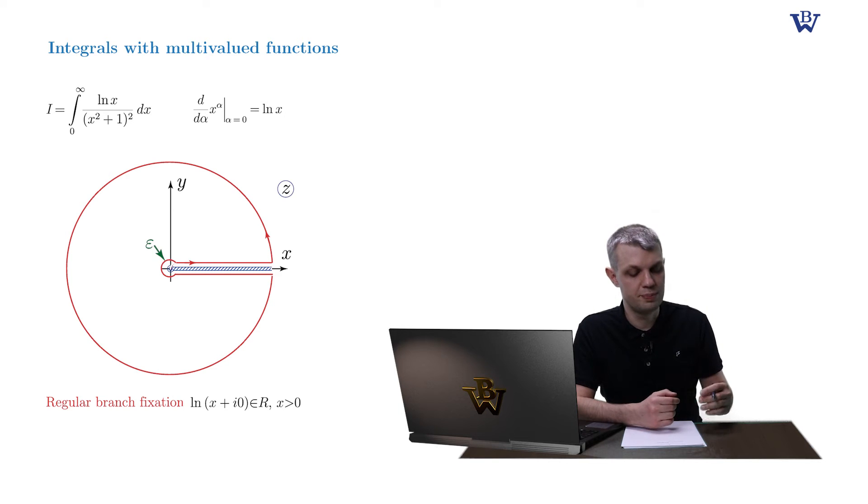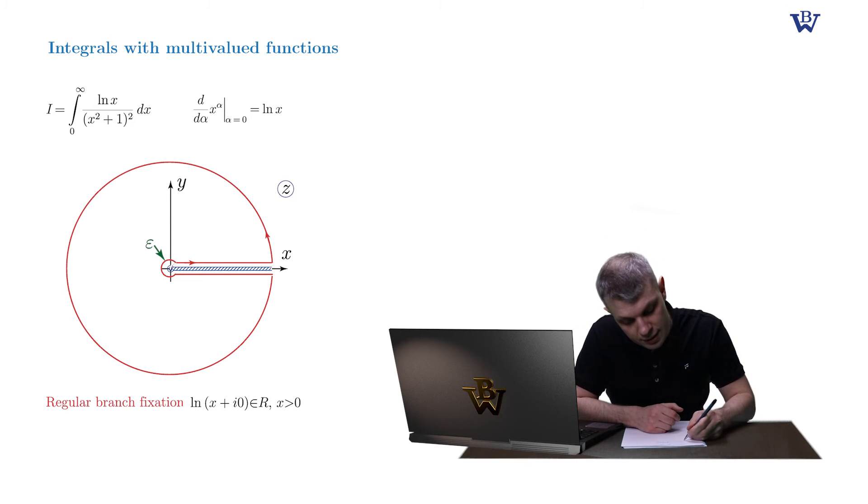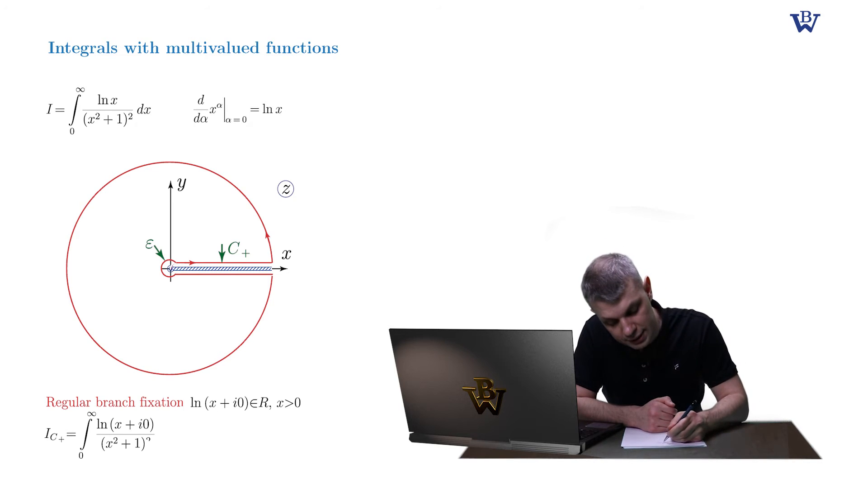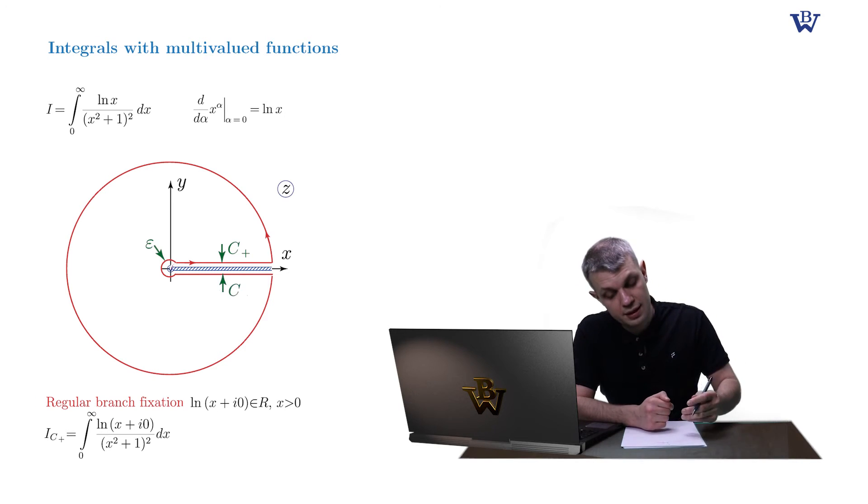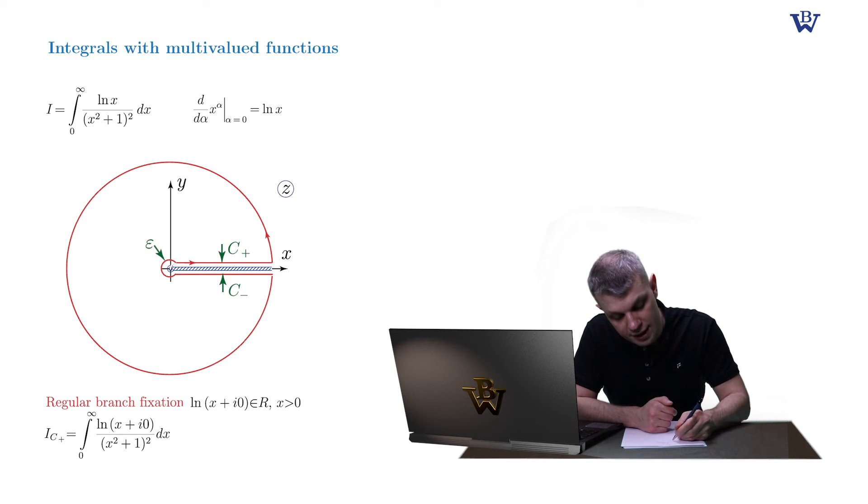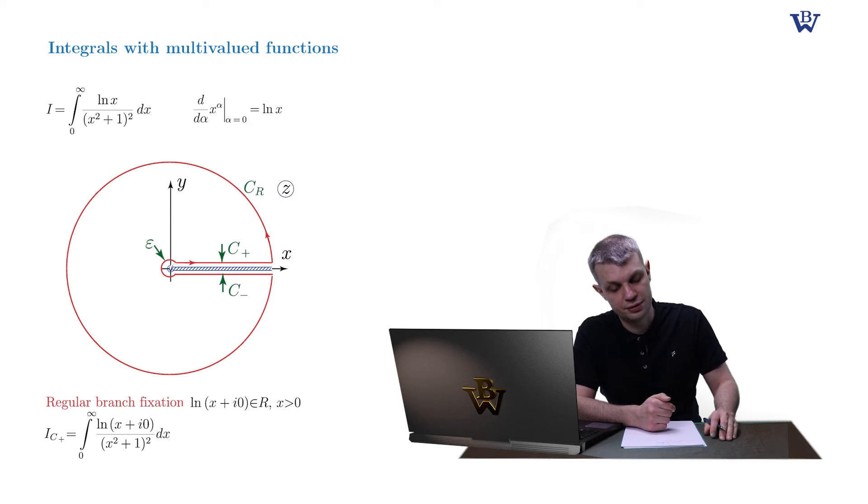So now we need to express our original integral via this new closed contour integral. As before, it consists of four parts. The first part, c plus, is obviously our original integral from zero to plus infinity. The second part, c minus, is the twin of this contour running along the lower bank of the branch cut. Then the infinitesimal circle c epsilon and the large circular integral cr, where r is the radius of the circle. Let us first discuss the circular integrals.